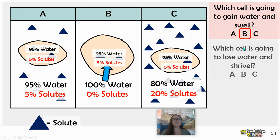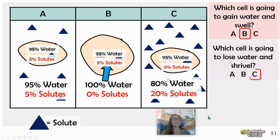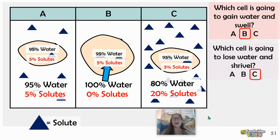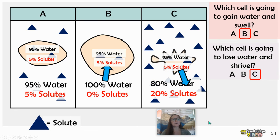Now let's see which cell is going to lose water and shrivel. Looking at the concentrations of water — it's C. Cell C has 95% water on the inside and only 80% water on the outside. So cell C is in a hypertonic solution, the water is going to come out, the cell is going to shrivel and lose mass.